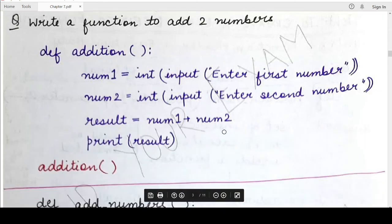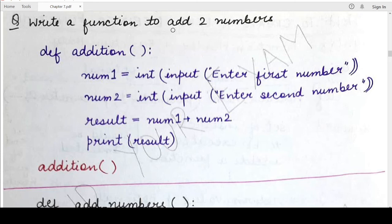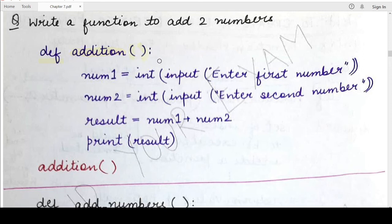Now I'll quickly go through a few examples of how to write and call a function. One important point: before calling any function, you must write its function definition first — the Python interpreter should have read the function definition before it encounters the function call, otherwise an error will occur. The first example is a function to add two numbers. I have defined the function with the name addition and empty round brackets with the required colon. No parameters are passed, so the round brackets are empty.